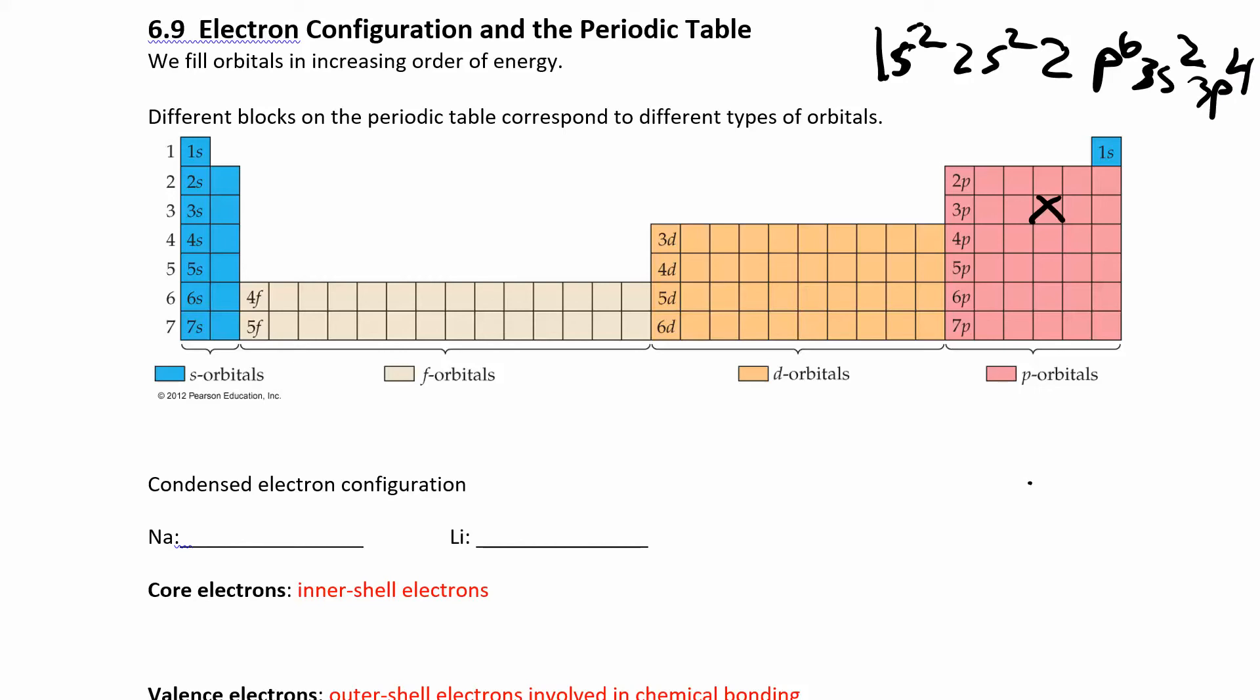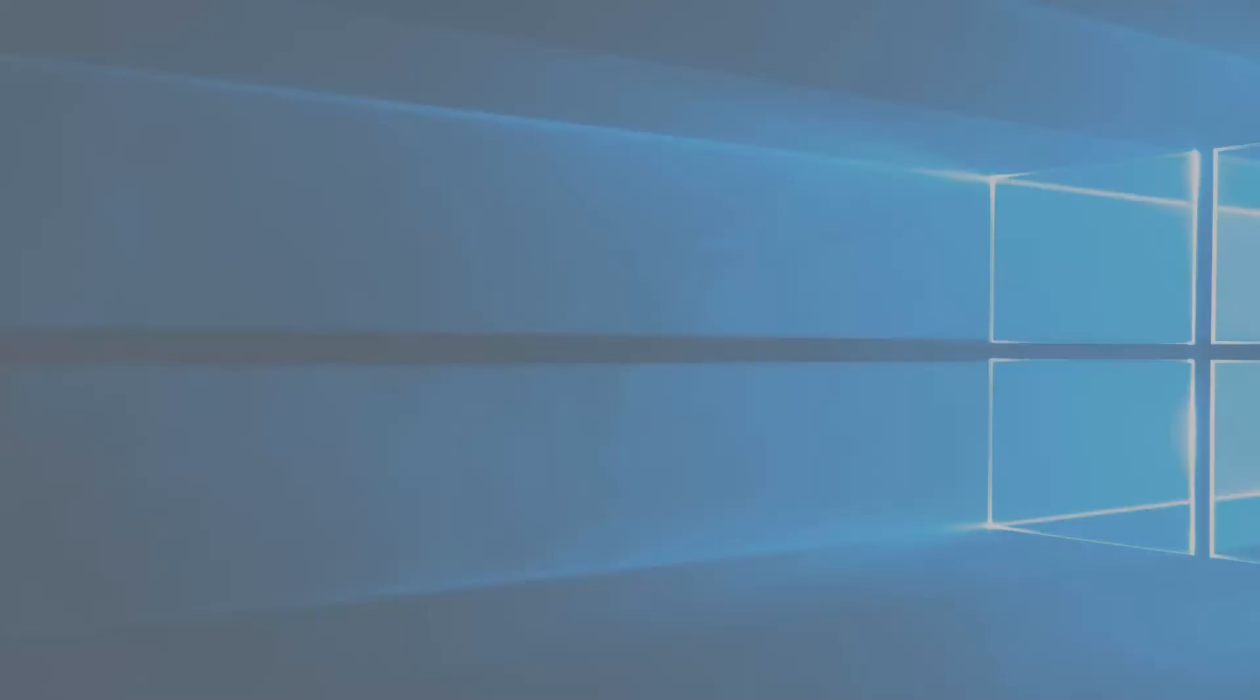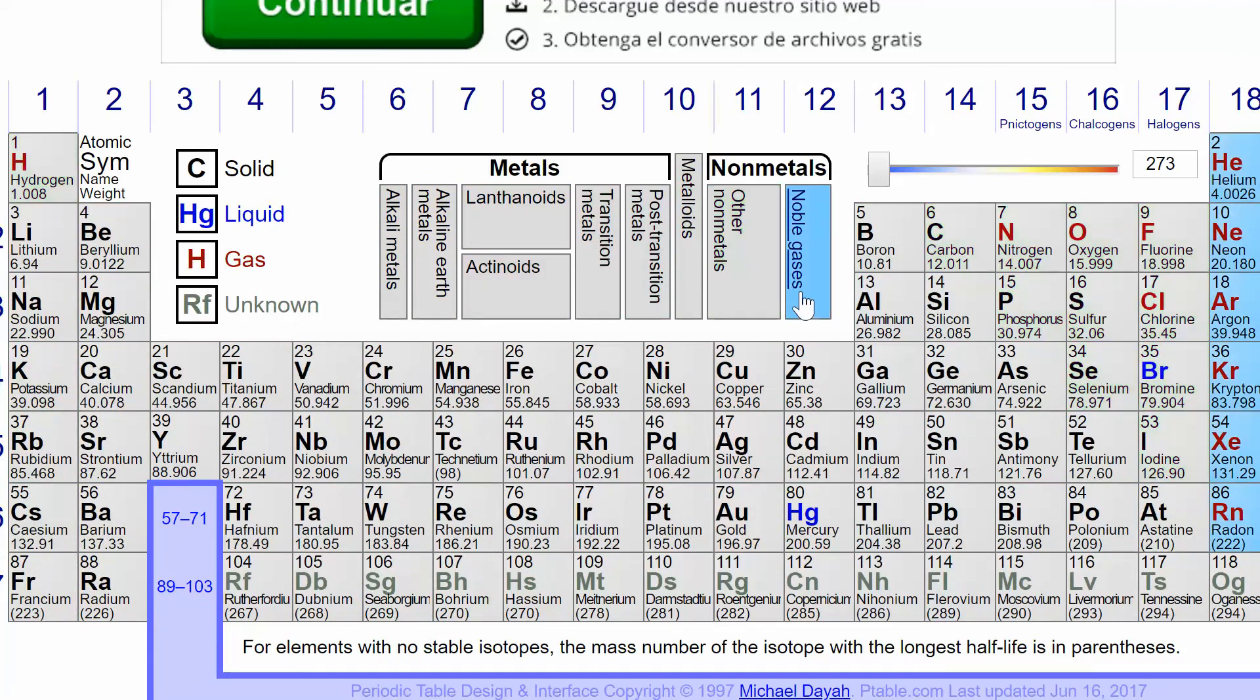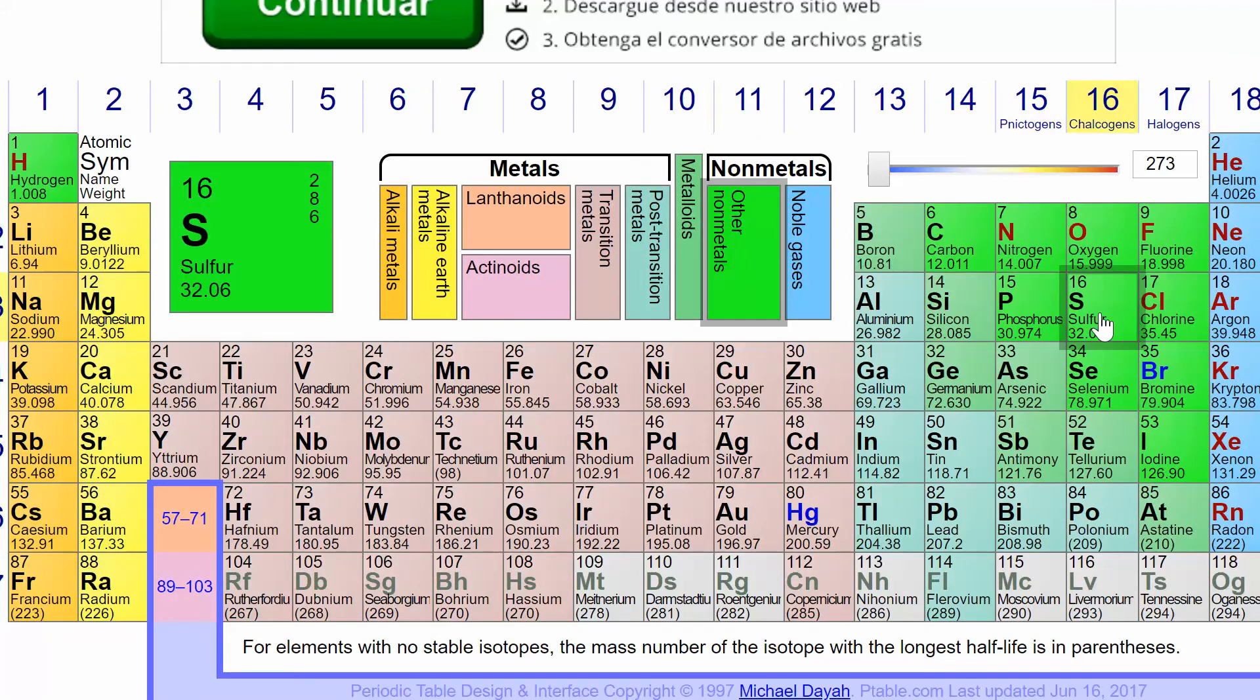Now if I add up the electrons on top here, I have 2, 4 plus 6 is 10 plus another 6 is about 16. And if I go over to the periodic table, element 16 here is sulfur.